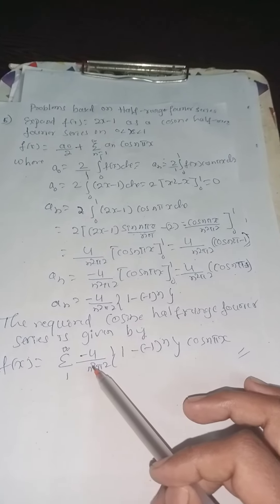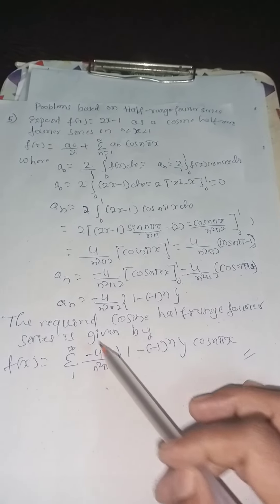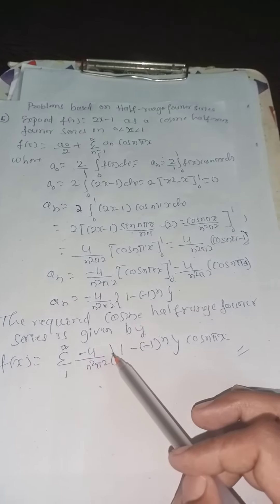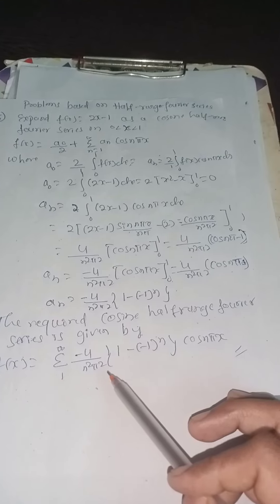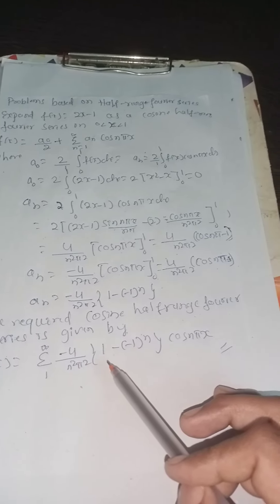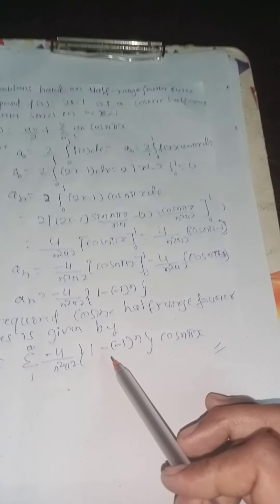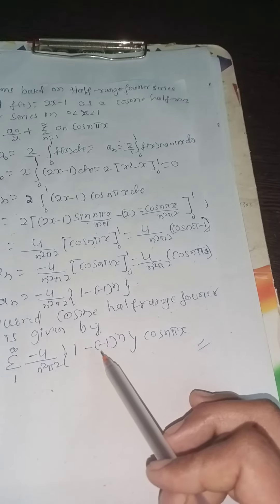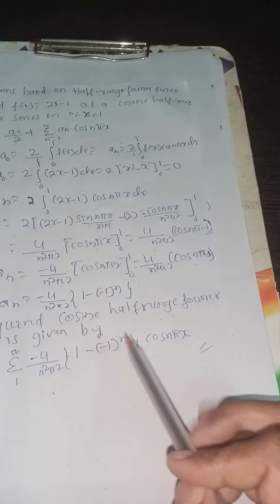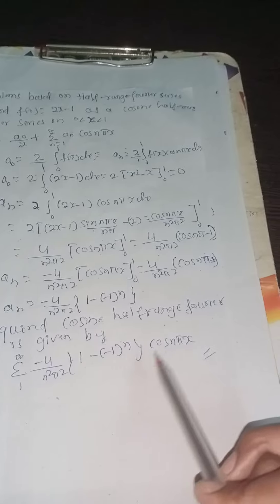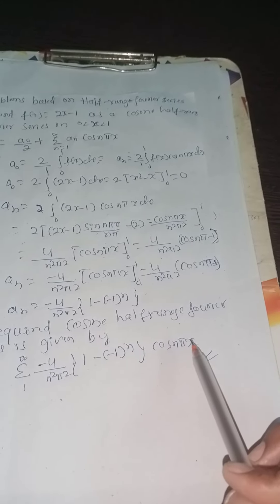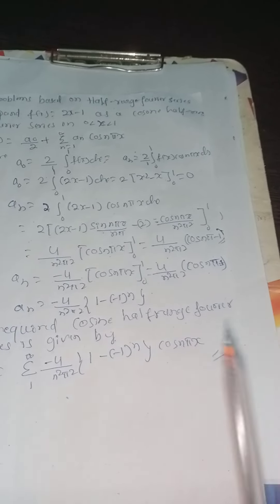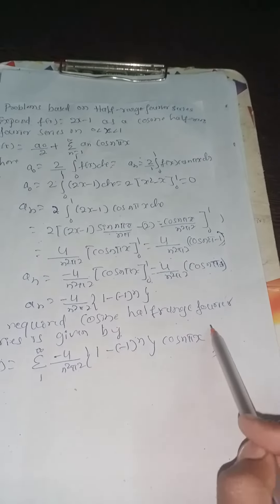Therefore the required cosine half-range Fourier series is given by f(x) equal to summation from n equal to 1 to infinity of [minus 4 divided by n squared π squared times (1 minus (minus 1) raised to n)] cos(nπx). Thank you.